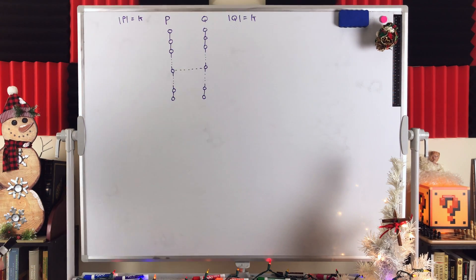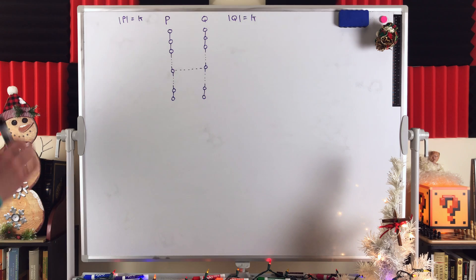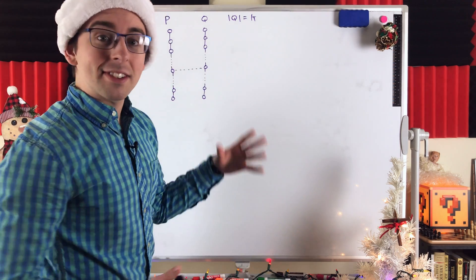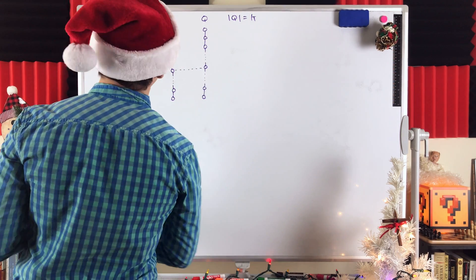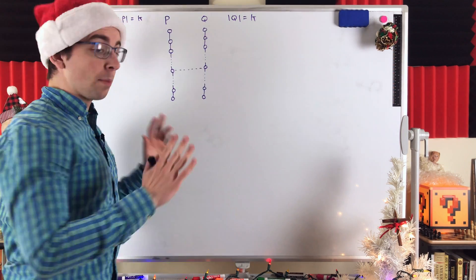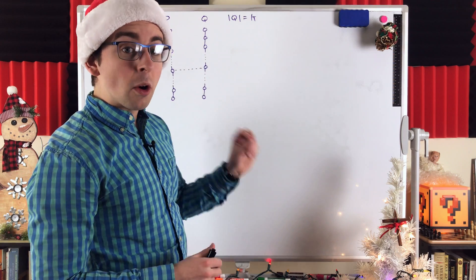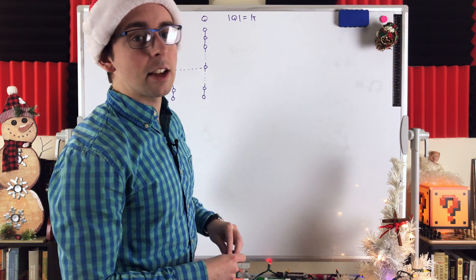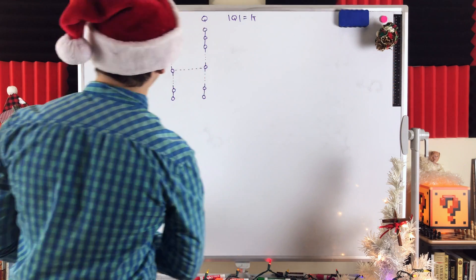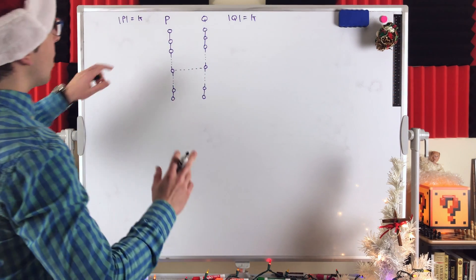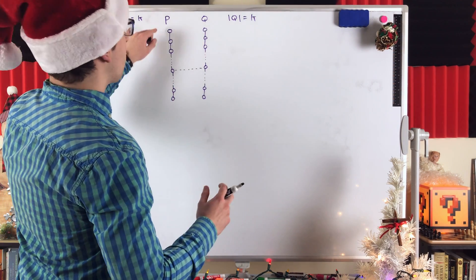We're supposing P and Q are two longest paths in a connected graph, and we're supposing for the sake of contradiction that they don't have any vertices in common.